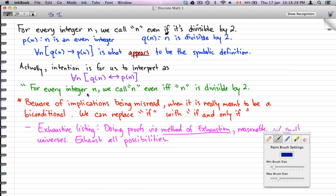So here's the warning thing. Beware of implications being misread. When it is really meant to be a biconditional, we could replace this if with if and only if. So what they really did here is, we shorthanded if and only if with just the word if. So you gotta watch out for that.